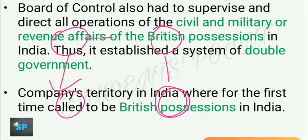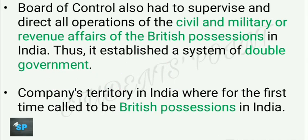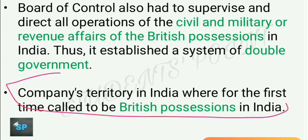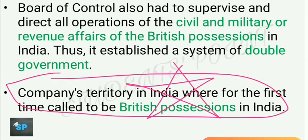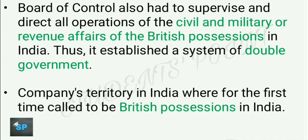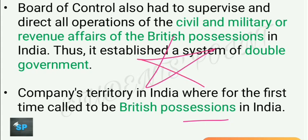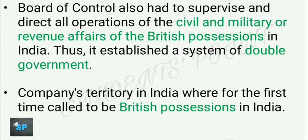Company territory in India was for the first time called 'British possessions in India' under this act — a very important statement. Several examinations have asked after which act company territory was first called British possessions in India. The answer is Pitt's India Act 1784. This act also established the supreme control of the British government over the company's rule in India.